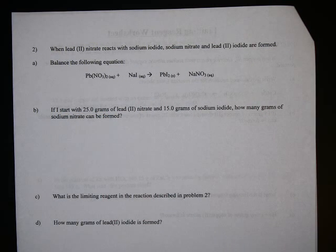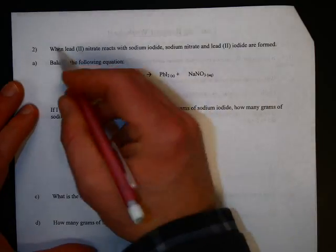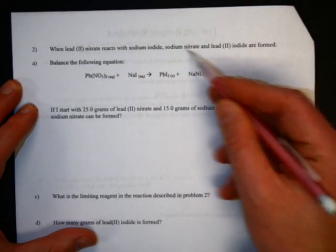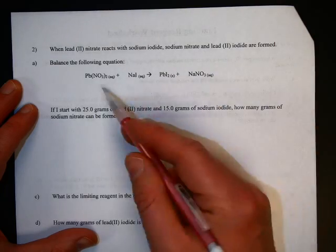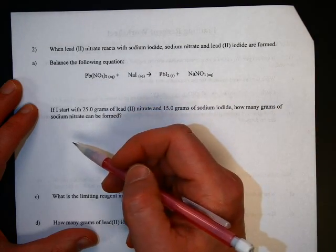Hi! We're going to do some problems from the homework for today, starting with number two. It says when lead nitrate reacts with sodium iodide, sodium nitrate and lead II iodide are formed. There's the reaction. Part A is to balance it.